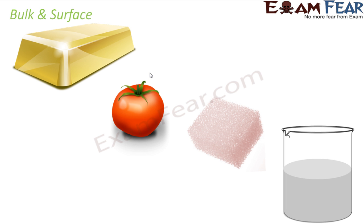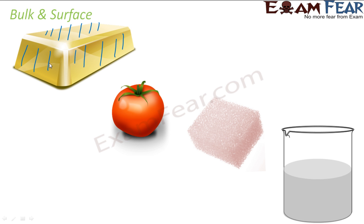To understand adsorption and absorption in more detail, it's good to introduce two terms: bulk and surface. For any object — for example a tomato, gold coin, or sponge — the part exposed to another state (like air) is called the surface, while whatever is inside is called the bulk. For example, the red outer part of a tomato is the surface, but inside you get seeds and pulp — those form the bulk.